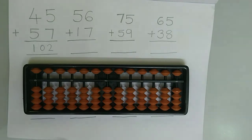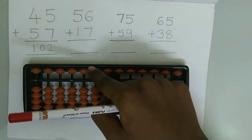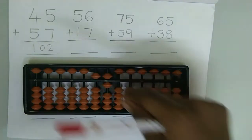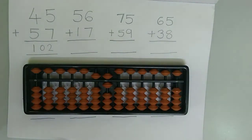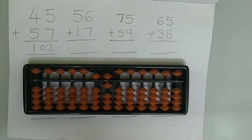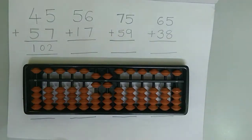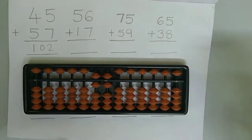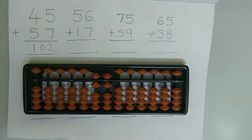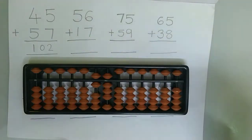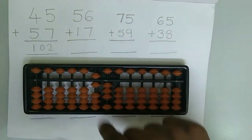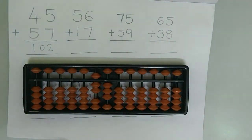Now let's try the second example which is 56 plus 17. First we need to represent 56 on the abacus. Now we need to add 17. First we need to add 1 to the tens rod and 7 to the ones rod. Here we use the big friend concept. The friend of 7 is 3, so we need to subtract 3, which is 6 minus 3. Here we use the small friend concept. The friend of 3 is 2, so we add 2 and subtract the boss which is 5. And at the last we need to add the big friend boss which is 10. The answer is 73.